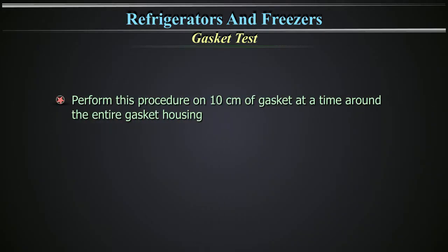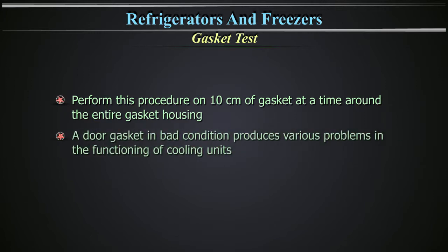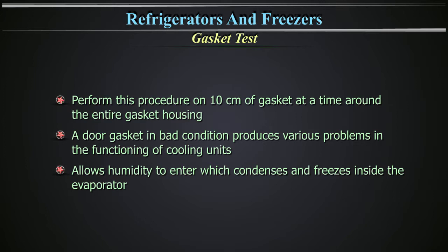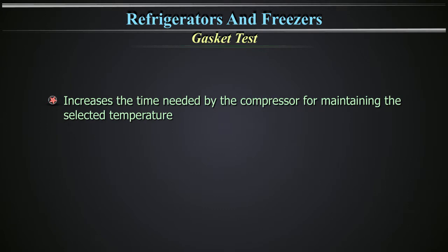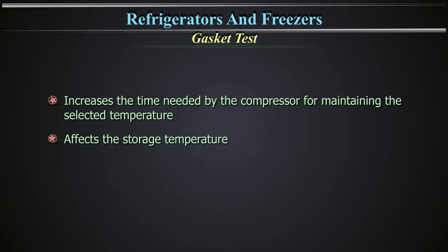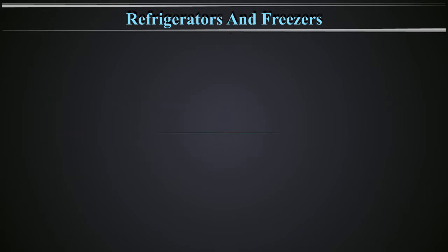Perform this procedure on 10 cm of gasket at a time around the entire gasket housing. A door gasket in bad condition produces various problems in the functioning of cooling units, as it allows humidity to enter which condenses and freezes inside the evaporator. It increases the time needed by the compressor for maintaining the selected temperature, affects the storage temperature, and increases operational costs.